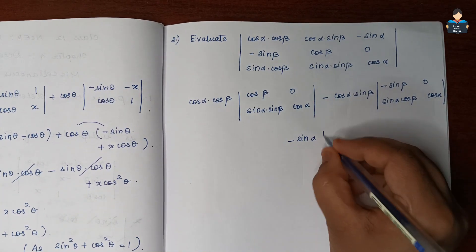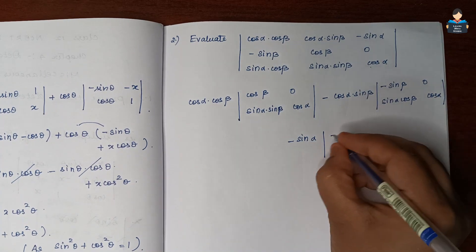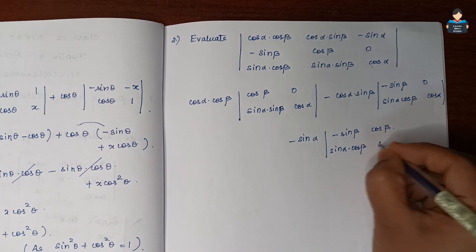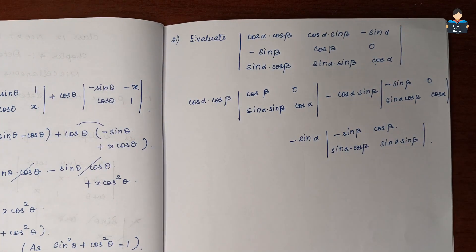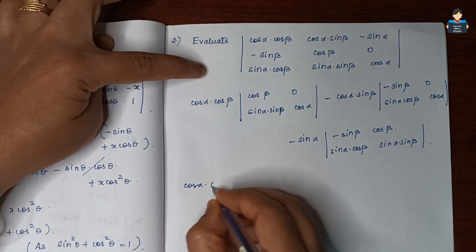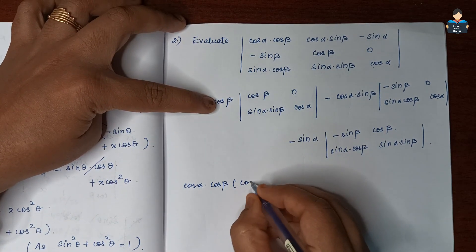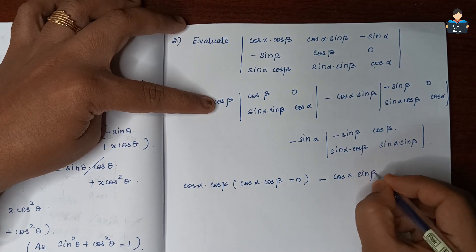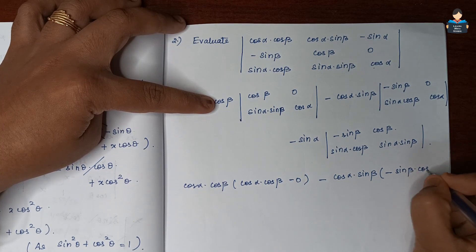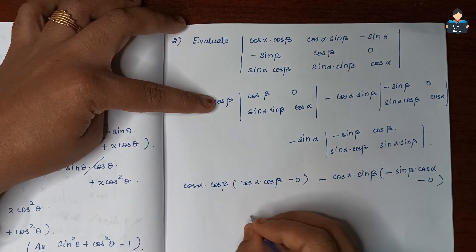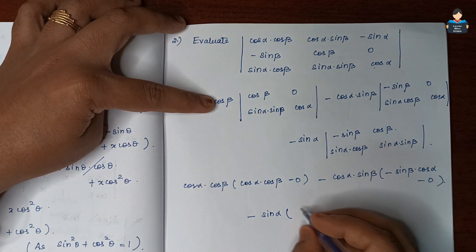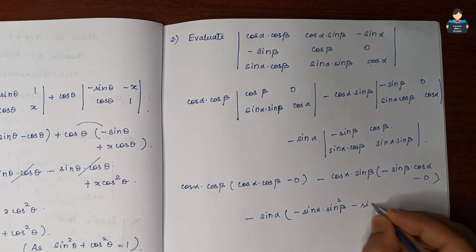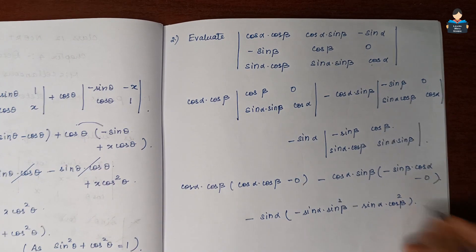Next we have minus sin alpha. Cross-multiplying: cos alpha times cos beta minus 0, giving cos alpha·cos beta. Then minus sin beta times cos alpha minus 0 gives minus sin beta·cos alpha. The last term involves minus sin alpha multiplied by minus sin alpha·sin²β minus sin alpha·cos²β.